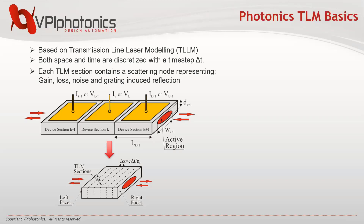During Photonics TLM simulation, each device section is discretized into small TLM subsections. The smallest possible length of the TLM subsection is equal to the distance propagated by light along the device section during a single time step delta t. This time step is equal to the inverse of the simulation sample rate. Therefore, the larger the simulation sample rate, the smaller the TLM subsection sizes, allowing better spatial resolution and better accuracy. However, simulation time rapidly grows as the square of the simulation sample rate.